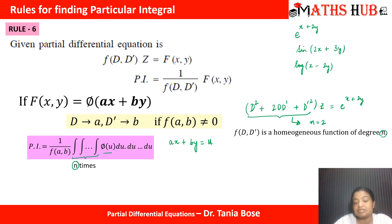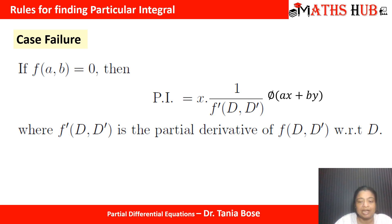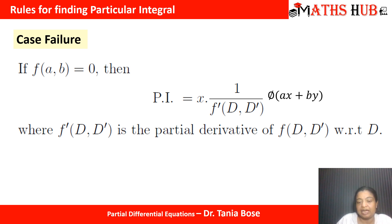This is the procedure when the denominator is not becoming zero. If the denominator happens to be zero — that is, if f(a, b) equals zero after substituting D with a and D' with b — then you proceed by the usual case failure method. In the case failure method, whenever f(a,b) equals zero, you multiply by x and take the derivative of the denominator with respect to b. This is the same method we follow in every case.